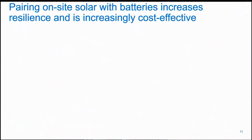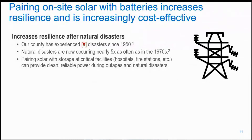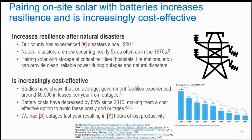Next, moving on to the topic of how pairing on-site solar with batteries can help increase resilience for those systems and how they're increasingly cost effective. One way to speak to resilience is talking about the number of natural disasters that have occurred in your region, and how pairing storage at critical facilities can provide clean and reliable power during those disasters. Storage is increasingly cost effective — studies have shown that government facilities have experienced around $5,000 in losses per year, and costs have declined by 85% in the last decade.